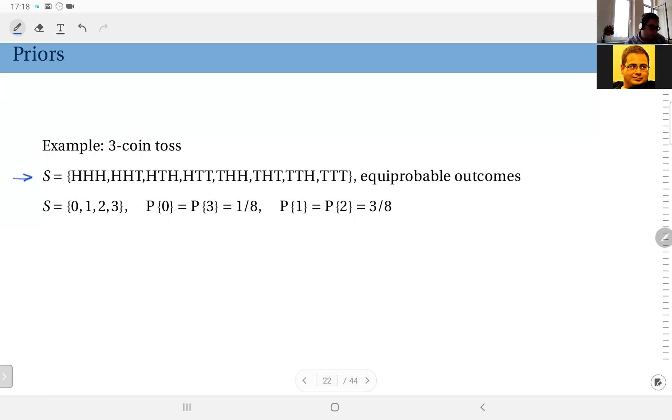Heads heads heads, heads heads tails, heads tails heads, heads tails tails, etc. We have eight distinct outcomes. And here, the observation is that we are actually distinguished between the order of the coins. And in this case, since we are assuming the coins are fair, these eight outcomes are equiprobable. So you should assign 1 over 8 probability to each of them.